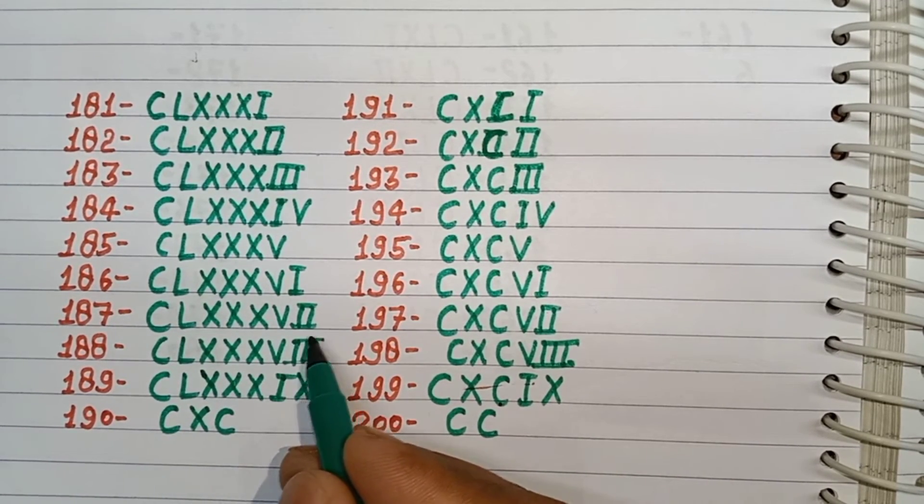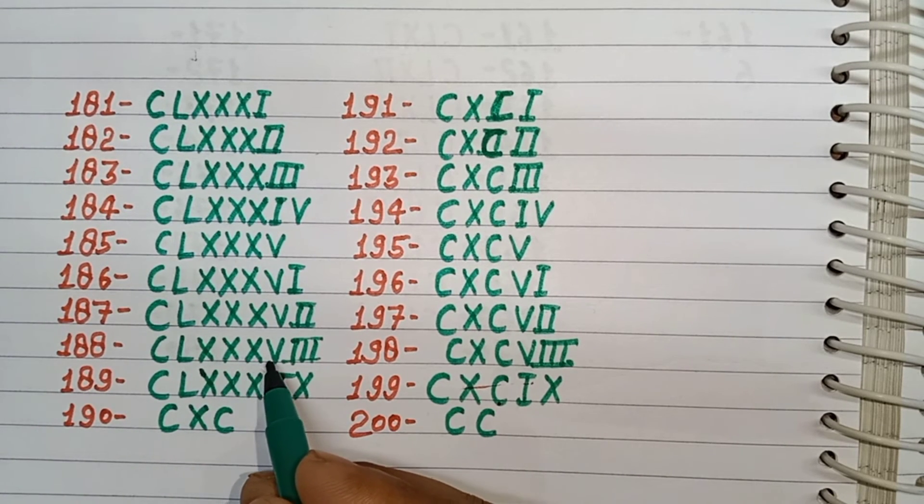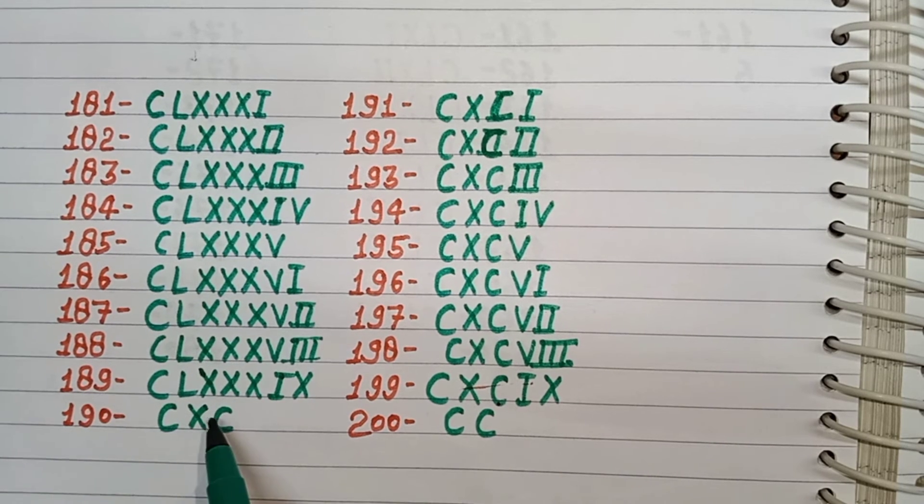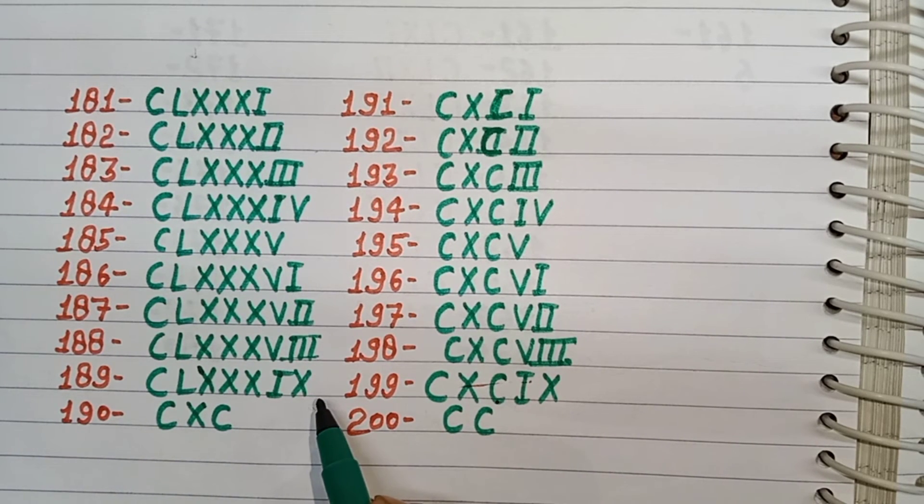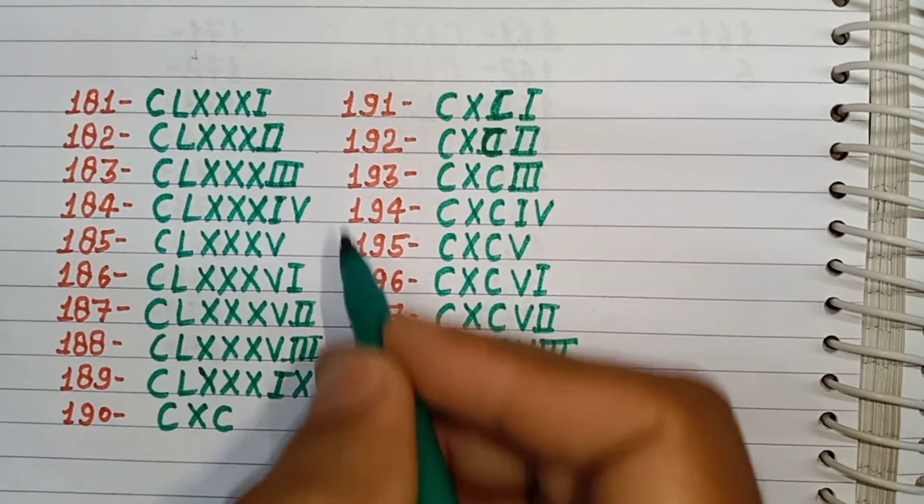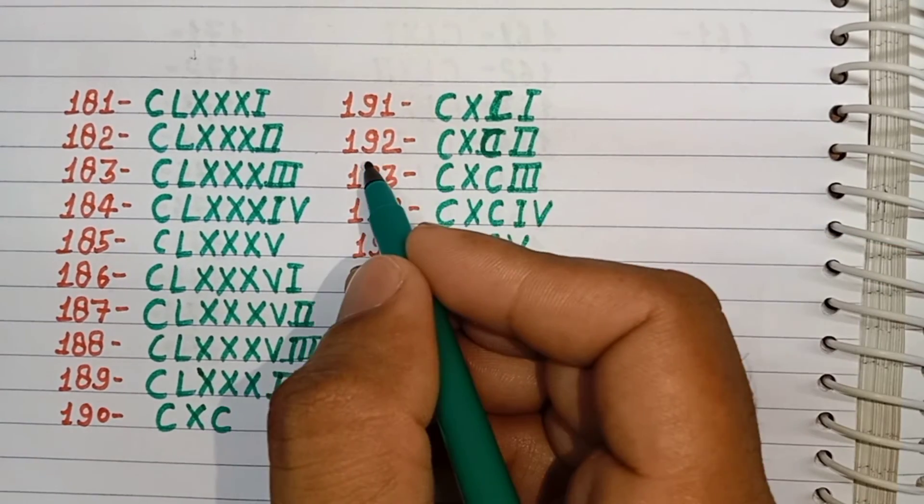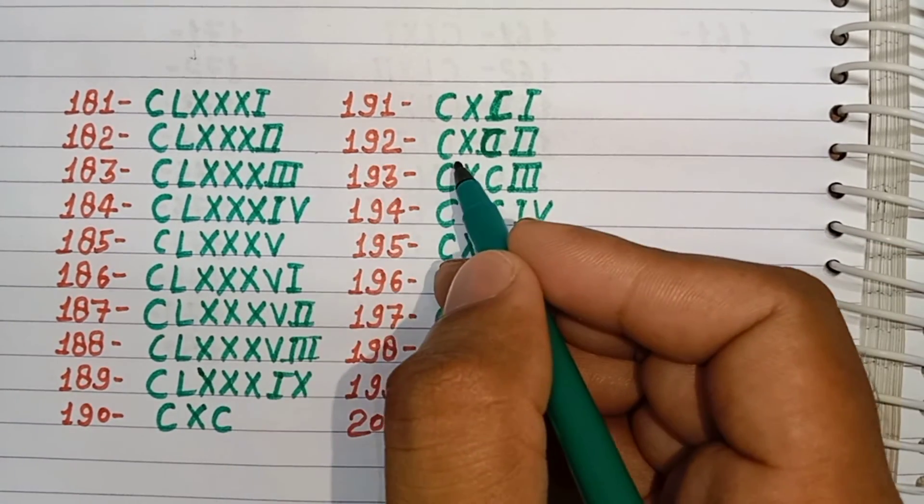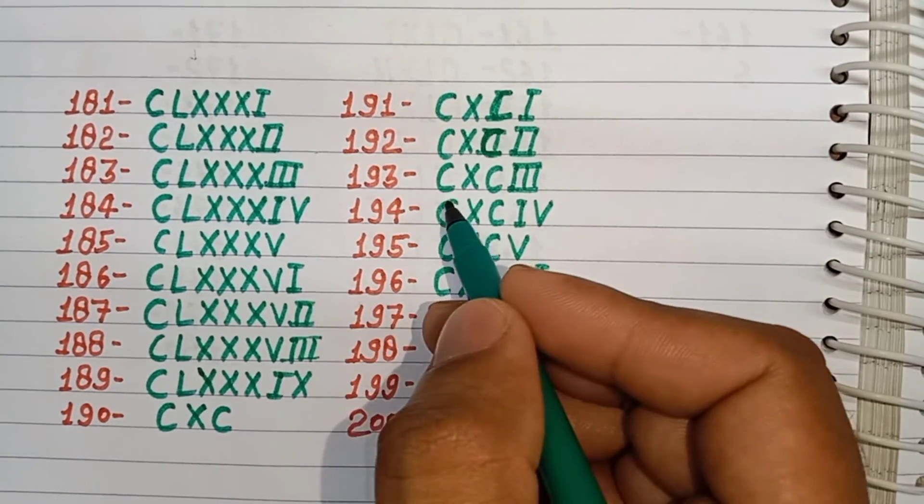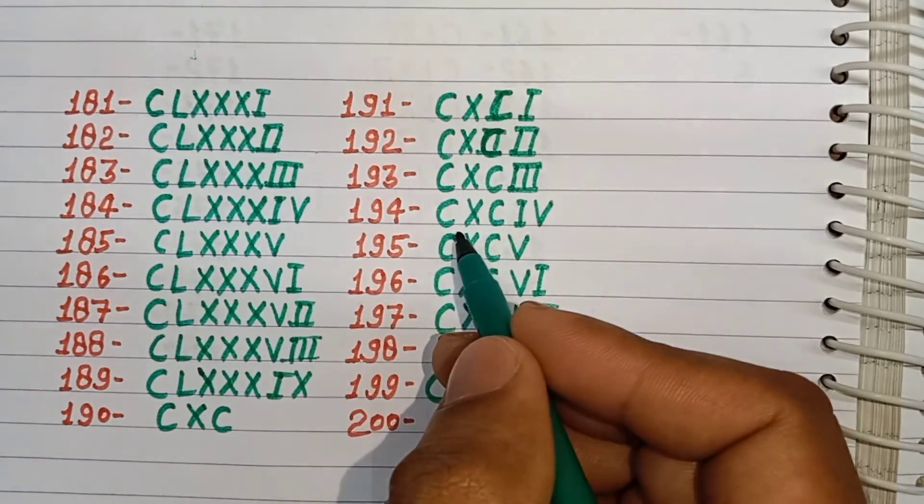188 CLXXXVIII, 189 CLXXXIX, 190 CXC, 191 CXCI, 192 CXCII, 193 CXCIII, 194 CXCIV